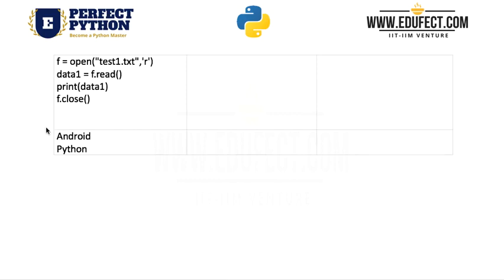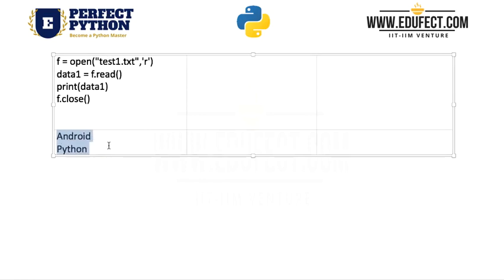Here we have a file — test1.txt — that we are using in this code. We say f = open('test1.txt'), specifying the name of the file we want to open. Here we specify the mode we want to open it in. 'r' stands for read, which means this file will only be opened in read mode and we cannot modify it.